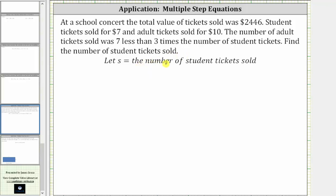Let's begin by letting S equal the number of student tickets sold. Now let's write an expression for the number of adult tickets sold, since we know the number of adult tickets sold was seven less than three times the number of student tickets. So if S is the number of student tickets sold, seven less than three times the number of student tickets sold is seven less than three times S.